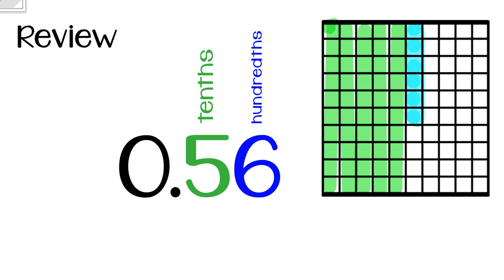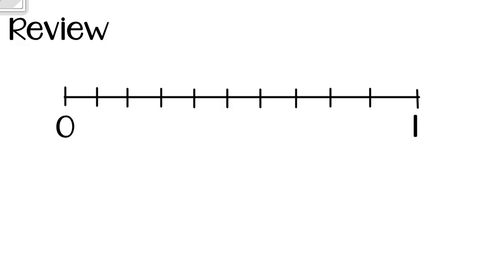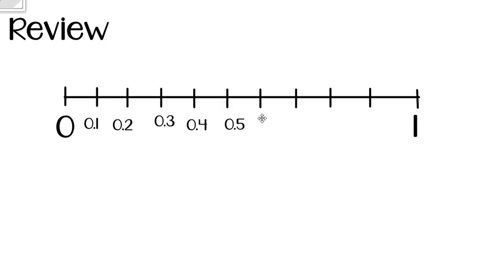We can also show decimals on a number line. Our number line starts at zero and ends at one, broken into ten equal parts — that means each part is a tenth. I can label them: one tenth, two tenths, three tenths, four tenths, five tenths, six tenths, seven tenths, eight tenths, nine tenths, and ten tenths — which we know is equivalent to one whole.